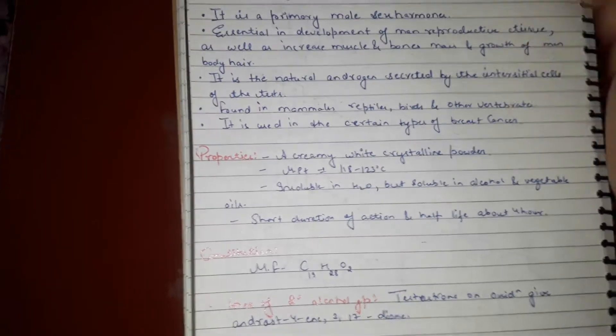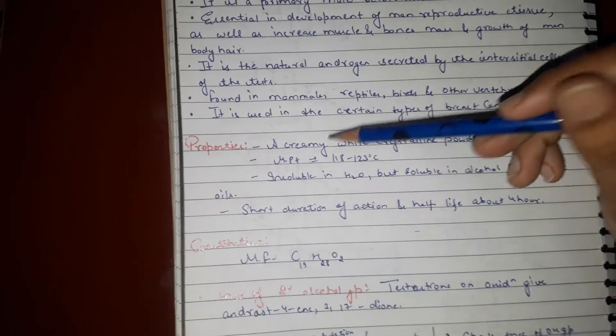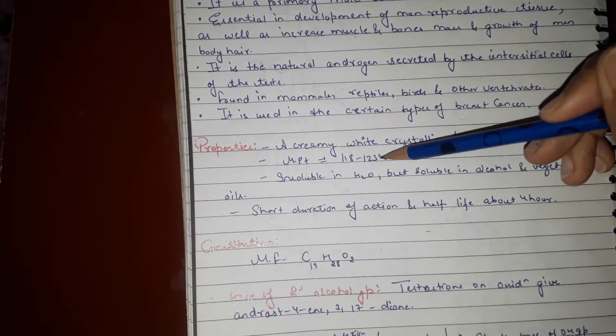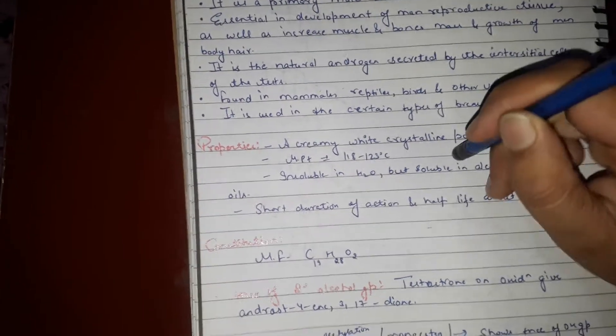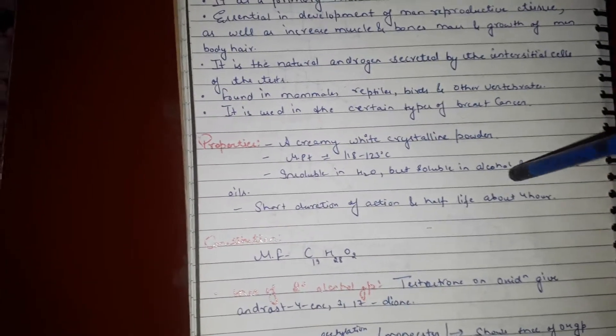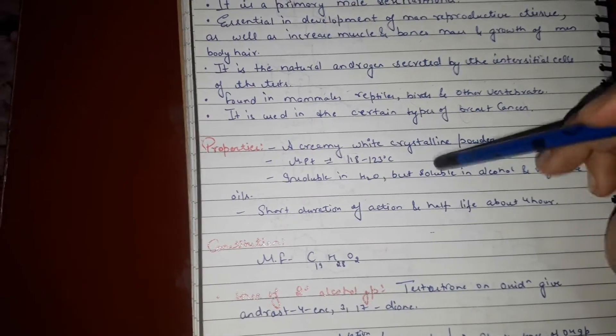Properties: It is a white crystalline powder, melting point 155 to 156 degrees Celsius. It is insoluble in water but soluble in vegetable oils and alcohol. Shorter duration of about four hours.